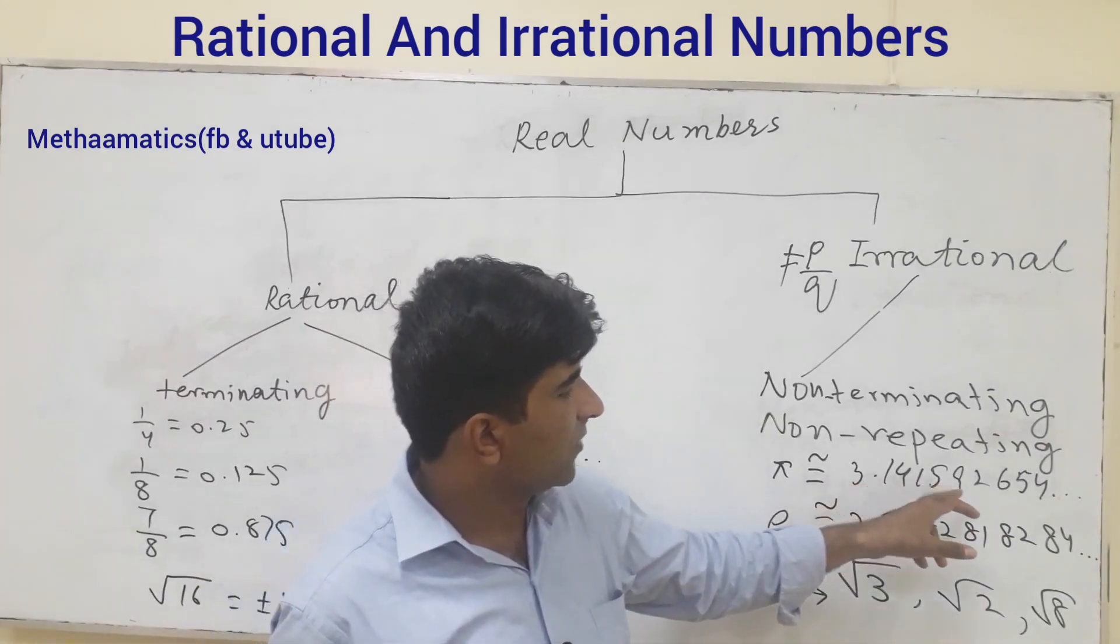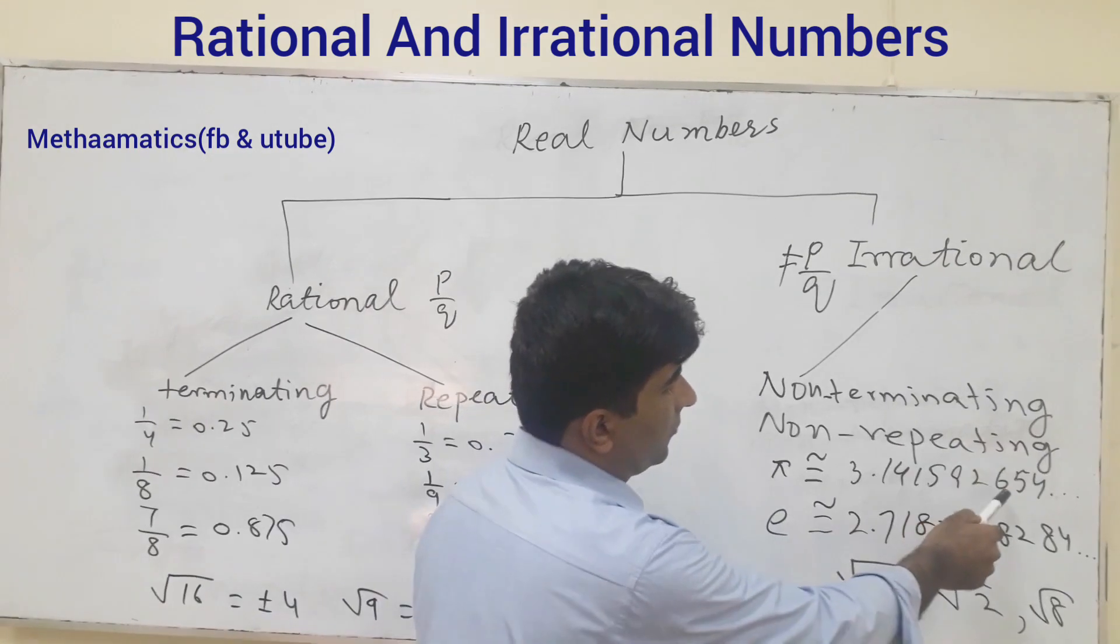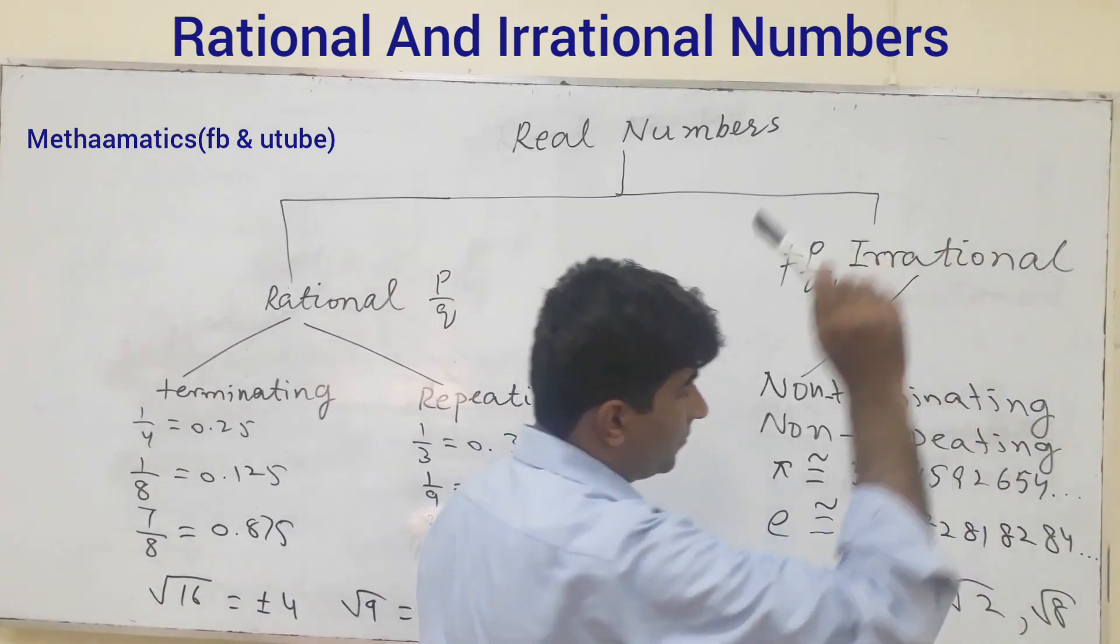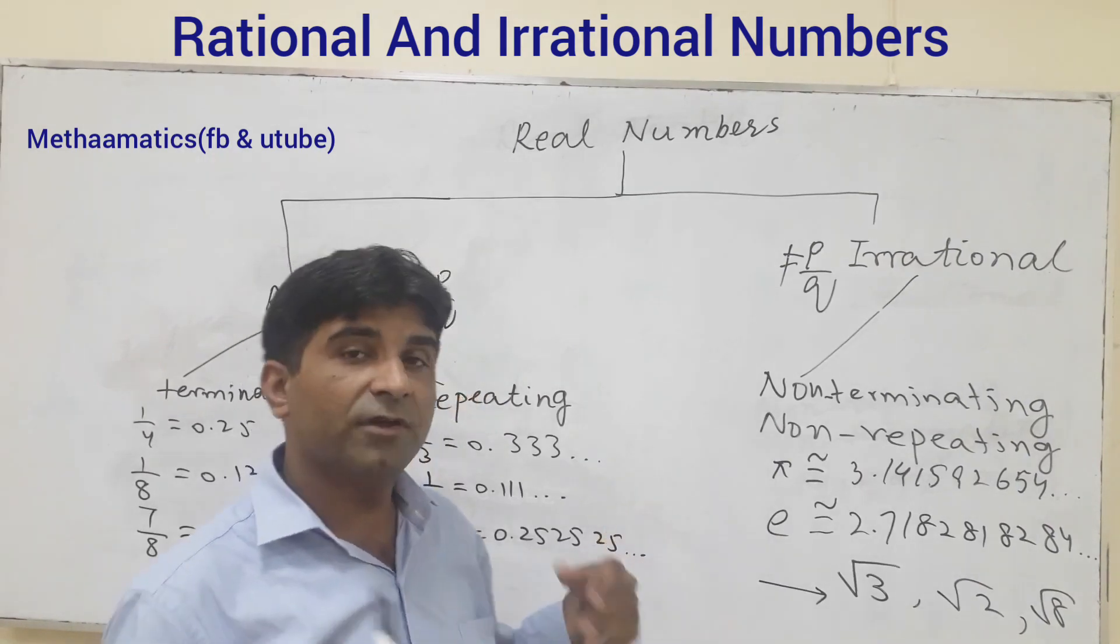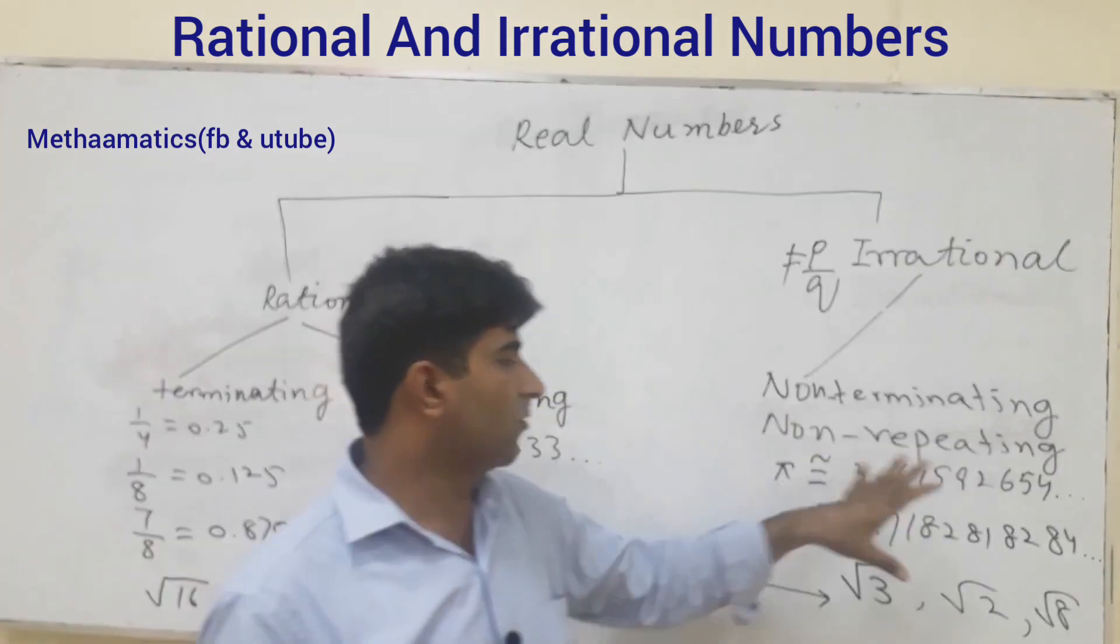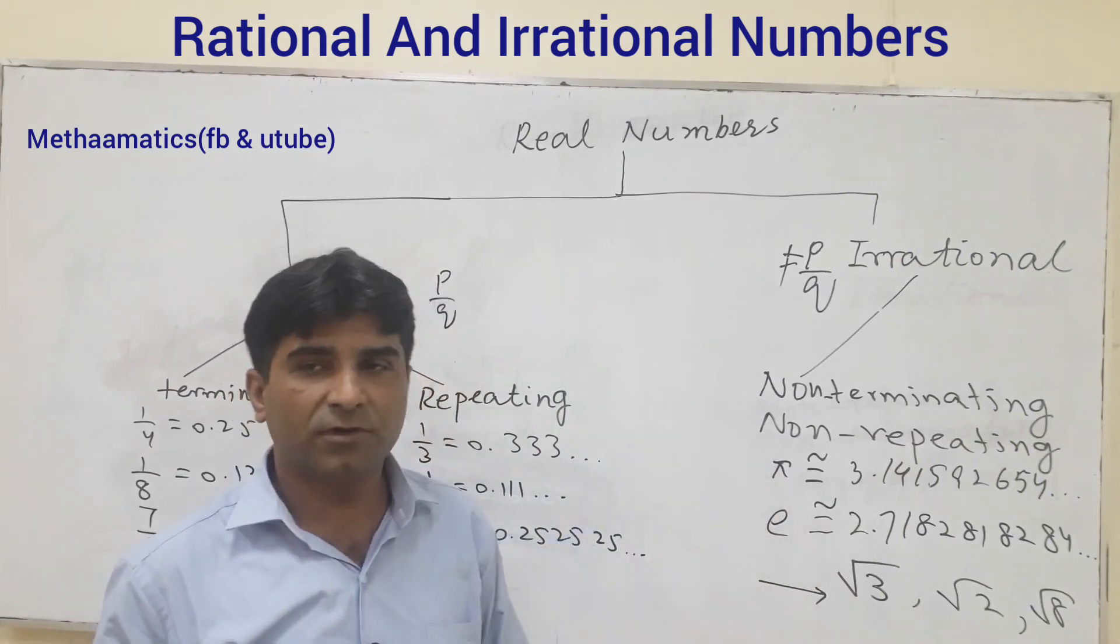92654, it continues. When you find the value of pi, you may find up to world level, it will not be repeating because it is an irrational number.